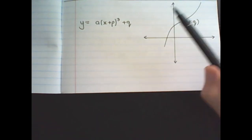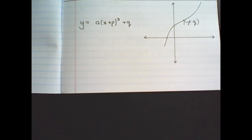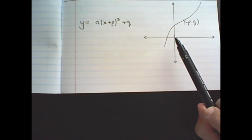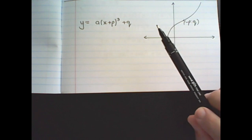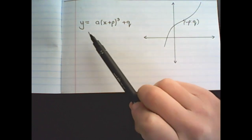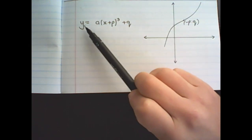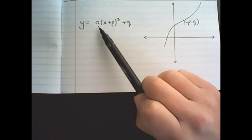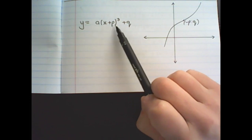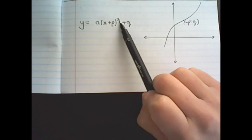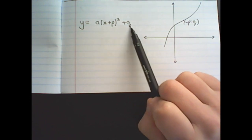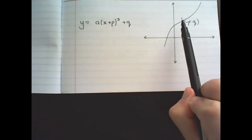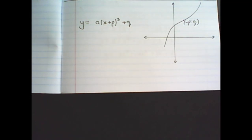Our third and final variation is one where there is no local minimum and maximum points. We simply have y equals a times x plus p cubed plus q, and the coordinates of p and q would be given on the graph.